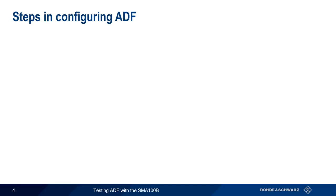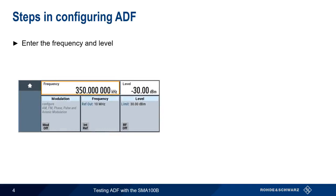There are two steps in configuring ADF. The first is entering the frequency and level, and this is done in the main SMA GUI. Frequency should be specified before configuring ADF, since an error message will be generated if you try to enable ADF for a frequency outside of the standard range of 190 to 1750 kHz.